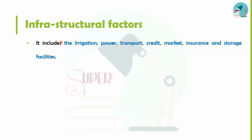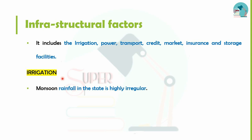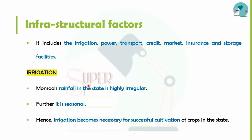Infrastructure includes irrigation, power, transport, credit, market, insurance, and storage facilities. Irrigation means providing a water supply to crops. Since monsoon rainfall in Tamil Nadu is irregular and seasonal, irrigation is essential. In dry regions, rain-fed crops are cultivated.